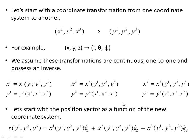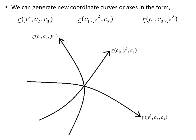Let's start with a position vector as a function of the new coordinate system y1, y2, y3. We can generate new coordinate curves or axes in the form of the position vector, allowing y1 to vary by holding y2 and y3 constant — that's what c2 and c3 stand for, constants. That gives us this coordinate curve here.